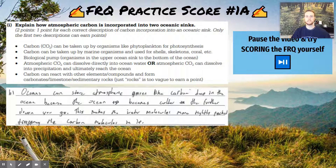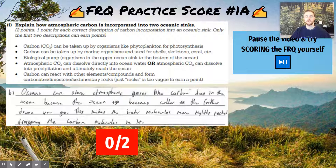Now we'll actually practice scoring some sample student answers. Pause the video, take a look at this sample answer and the rubric above it, and give it a score out of two points. So this would be a zero out of two. The student said that carbon dioxide can go deep in the ocean because it's colder as you go further down, making water molecules more tightly packed and carbon molecules stored — this doesn't fit with anything on the scoring guide. They were somewhat close to the idea that CO2 can dissolve directly into the ocean, but they haven't used the phrase 'dissolve,' which is a really critical term for direct exchange.